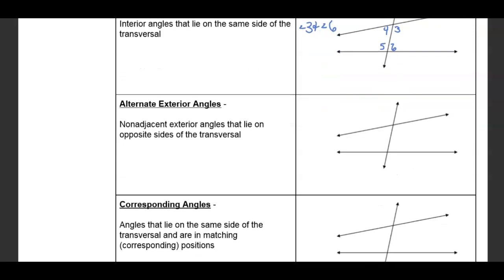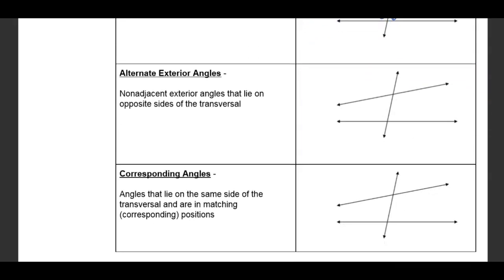Alternate exterior angles are non-adjacent exterior angles that lie on opposite sides of the transversal. So angles 1 and 7 are alternate exterior, and angle 2 and angle 8 are alternate exterior.